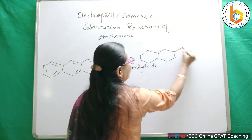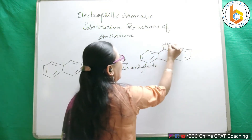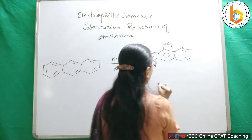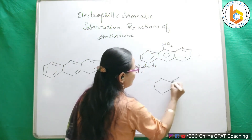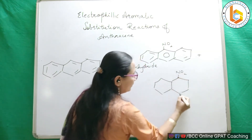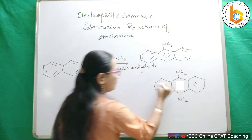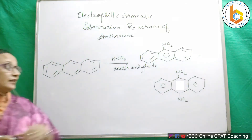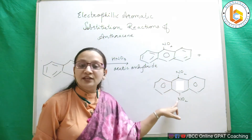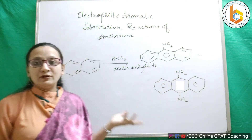So from nitration I can get 9-nitroanthracene, or I can get 9,10-dinitro-dihydroanthracene, because anthracene can not only show substitution but also addition at positions 9 and 10. That is the nitration reaction.